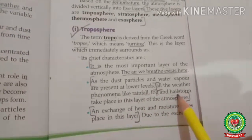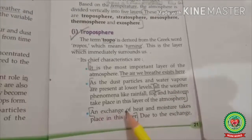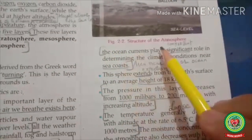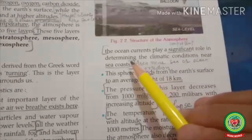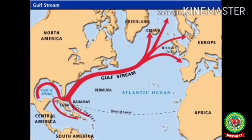This is the layer where all weather conditions occur and 90% of air is available. An exchange of heat and moisture takes place here — moisture meaning the amount of water vapor present in the air. Due to this exchange, ocean currents play a significant role in determining the climatic conditions near the sea coast. Ocean surface currents move large amounts of heat across the planet, redistributing heat and water vapor to all parts of the world.